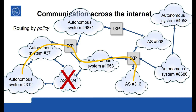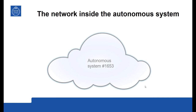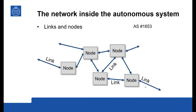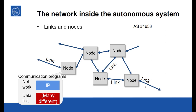That's the routing on the top layer of the internet between the various networks that together form the internet. When we dive into the cloud of an AS, we see a network composed of nodes and links. The nodes are the entities which decide in what direction an IP packet should be sent, and the links are the cables that carry data between the nodes. The nodes have two layers of communication programs: the internet protocol and data link protocols. There could be many different types of data links — you need a different data link to go across the Atlantic compared to going across a campus, within a building, or within a room.